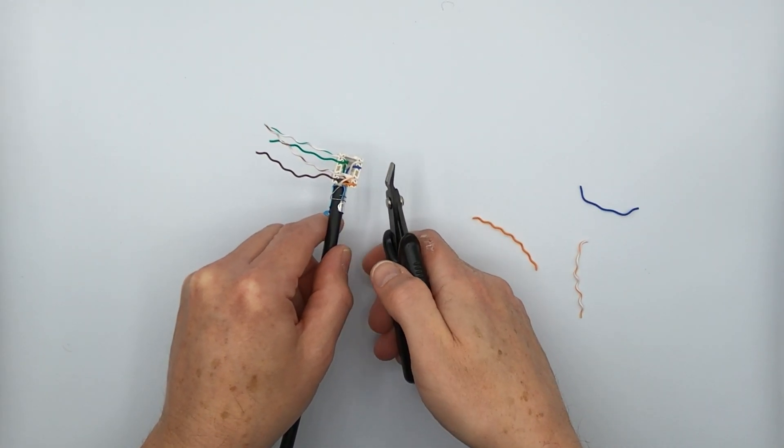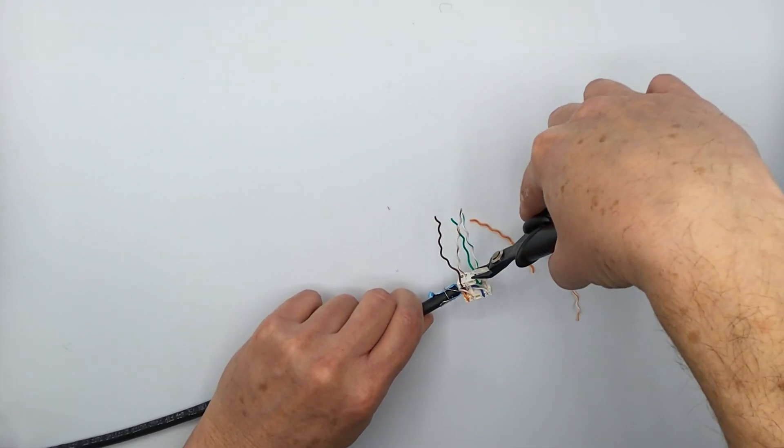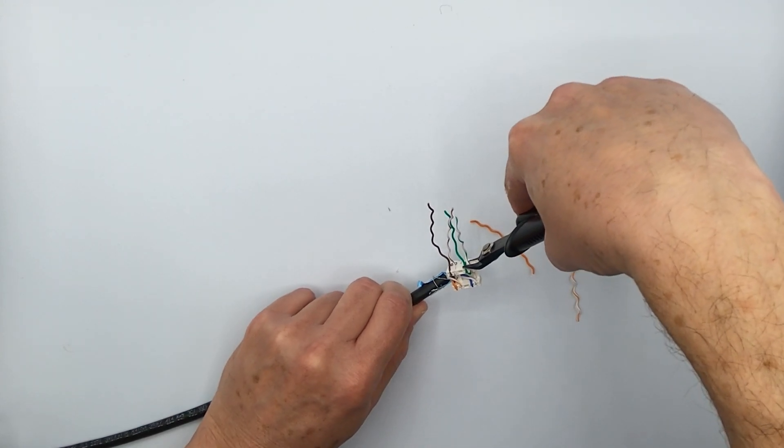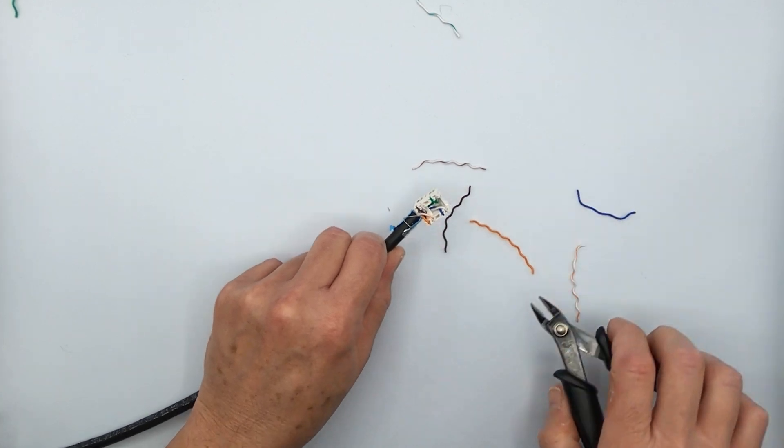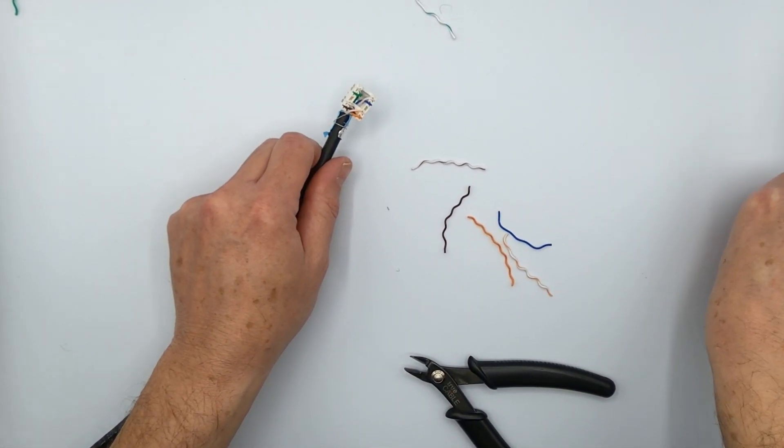So with that, we just start flush cutting. Put it right against the edge of this conductor holder cap and go at it. There we go. Pretty easy.